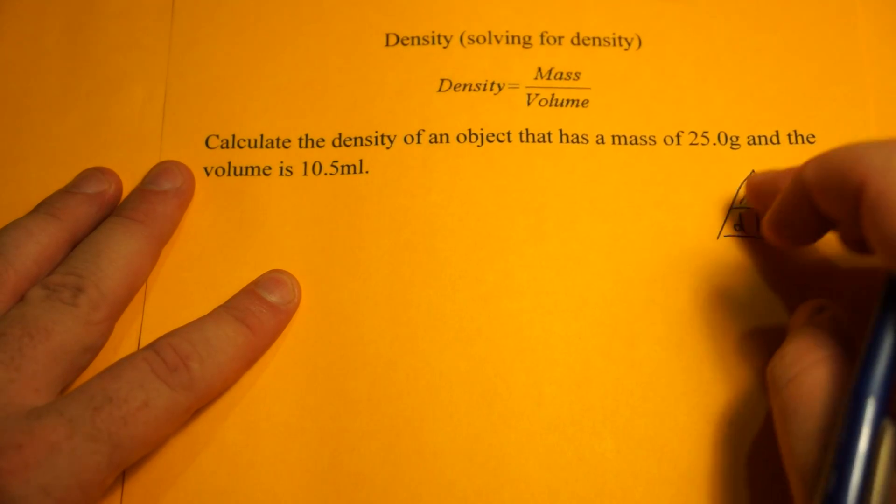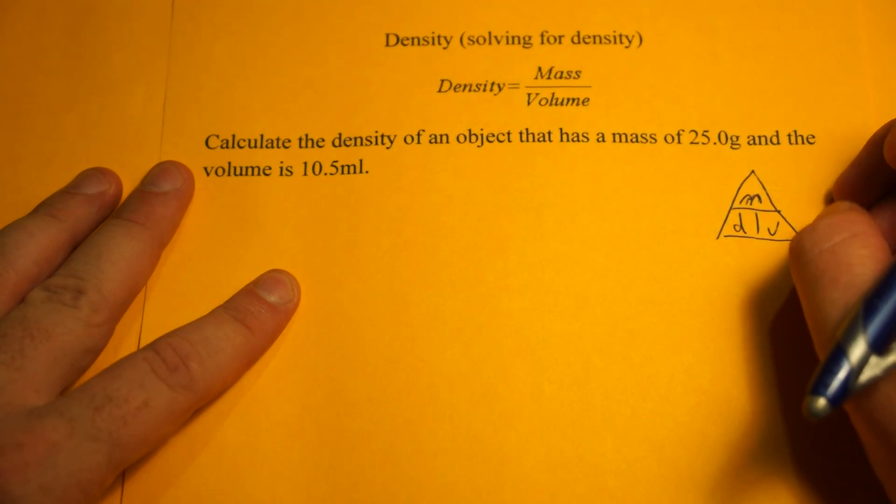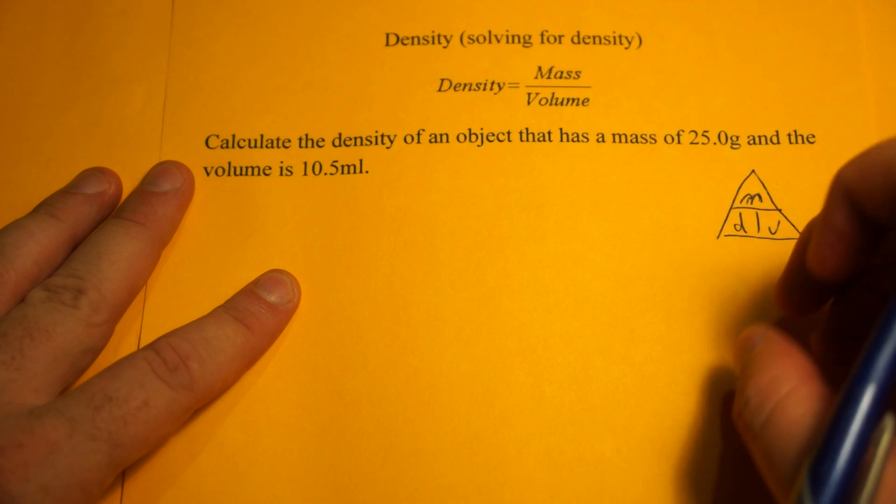If I want to solve for density, density equals mass divided by volume. If I want to solve for mass, mass equals density times volume. And if I want volume, mass divided by density will give me volume.